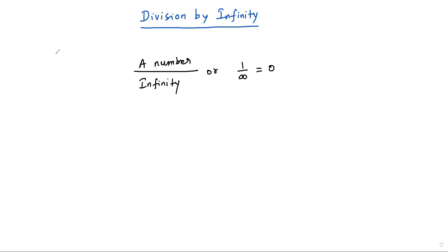Division by infinity. A number divided by infinity — say the number is just one and this is the infinity symbol. Here I divide the number one by infinity, and it results in zero. How?